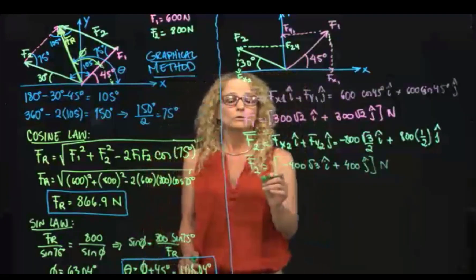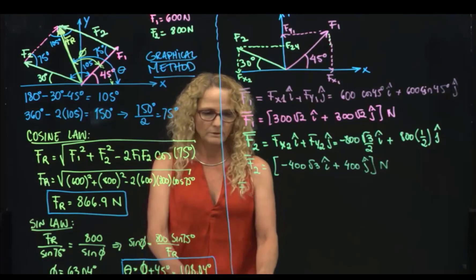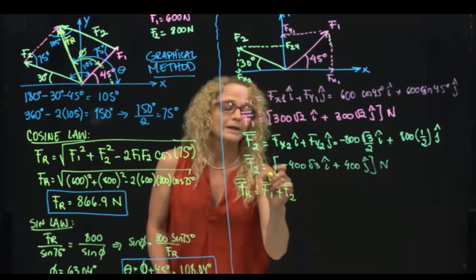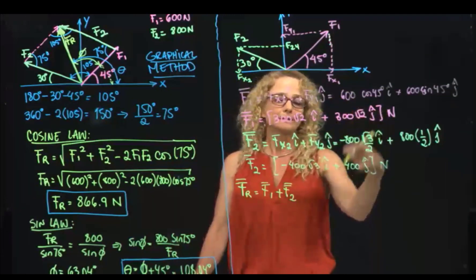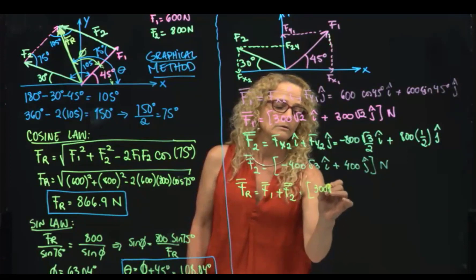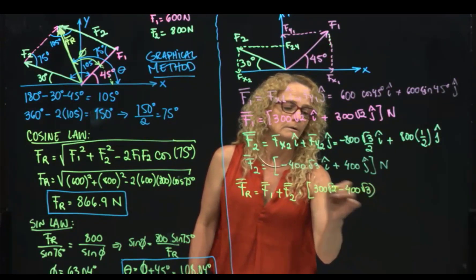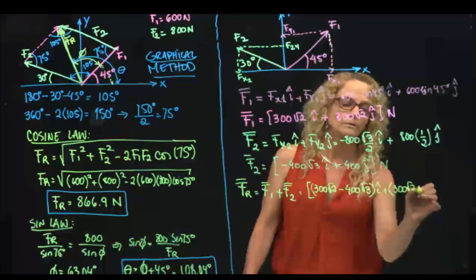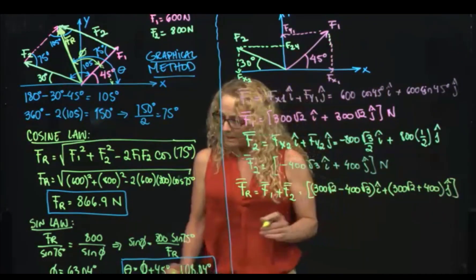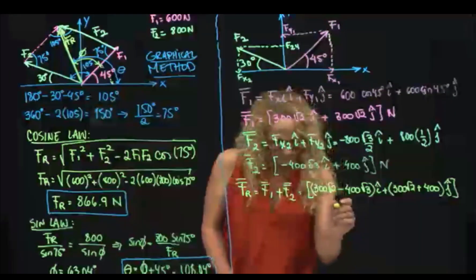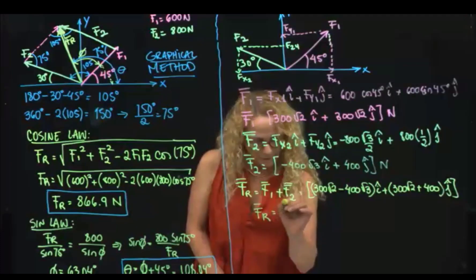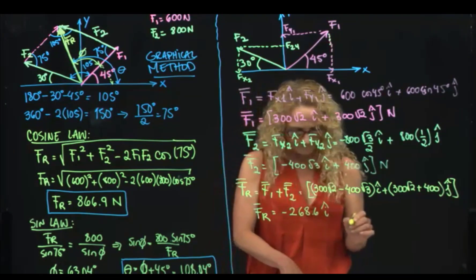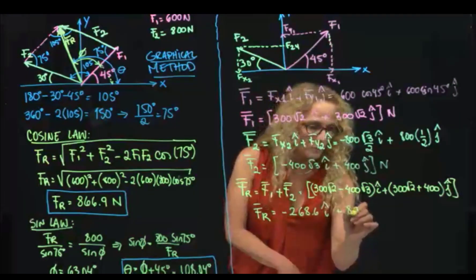So therefore, F2 is equal to negative 400√3 in i plus 400 j, in newtons. Now, what I do to find the resultant force — I add F1 and F2 as vectors. Therefore I add the i components and I add the j components. That will give me (300√2 minus 400√3) i plus (300√2 plus 400) j.